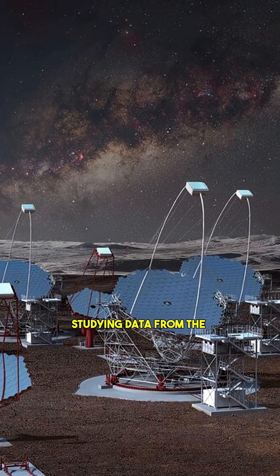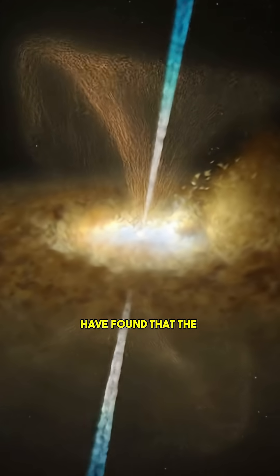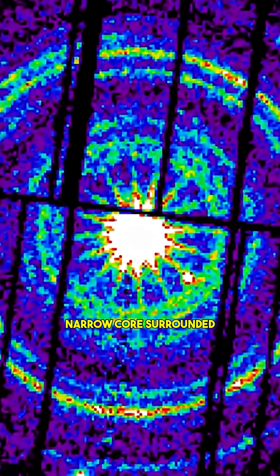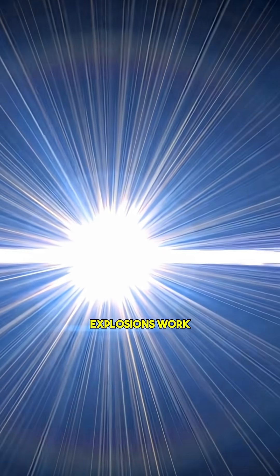Now, scientists studying data from the large-sized telescope in Spain have found that the boat's jets aren't simple. They're structured, with a fast, narrow core surrounded by a slower outer layer, challenging decades of assumptions about how these explosions work.